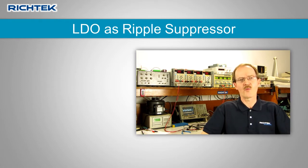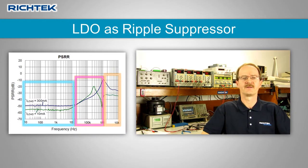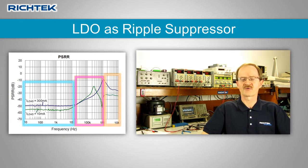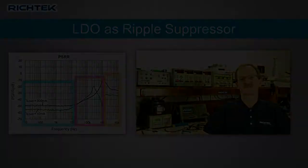But how well can an LDO remove ripple and noise from an input supply rail? This is related to the LDO power supply ripple rejection. Let's have a closer look at this.